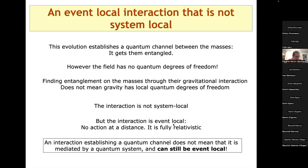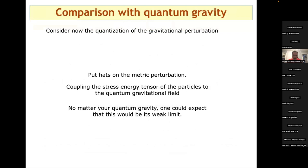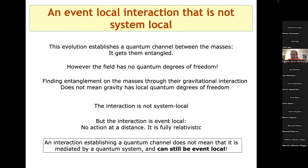The analogy: a Coulomb potential can create entanglement between two electrons prepared in a superposition of paths, but that is not proof that you need quantum electrodynamics to describe electromagnetism. Similarly, gravity creating entanglement via the QC model does not imply that gravity itself must be quantized.